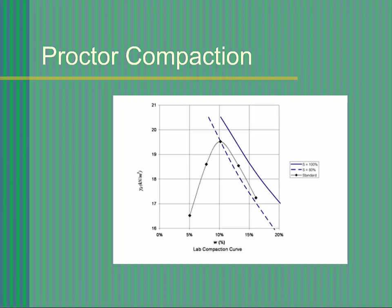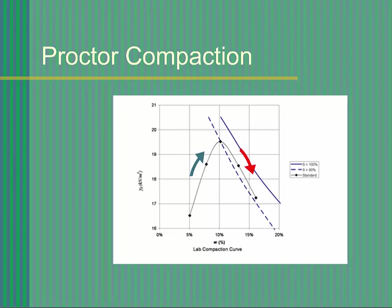However, if the soil is too wet, then there is little or no air left in the voids, and thus it becomes very difficult or impossible to compact. Your data should show this characteristic increase of dry density up to optimum moisture content and decrease of dry density after optimum moisture content.